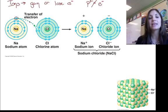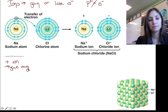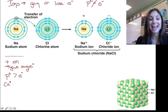When it gives it up, giving is a very positive thing. So that sodium is going to become a positive ion because it gave away an electron. If I give away electrons, I have more protons than I do electrons, and I become a cation.